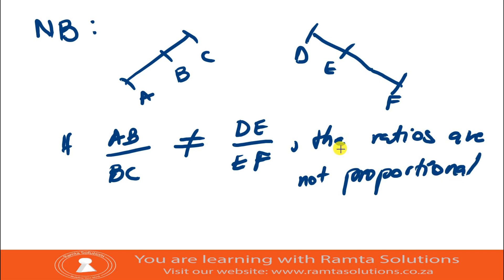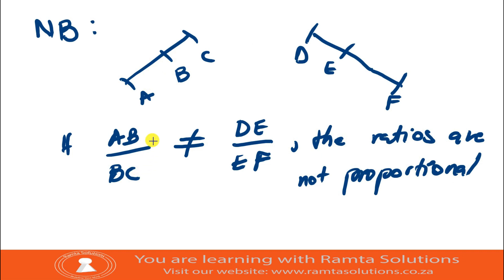You can only say they are proportional if you verify using their individual values. With that, see you next time. Bye!